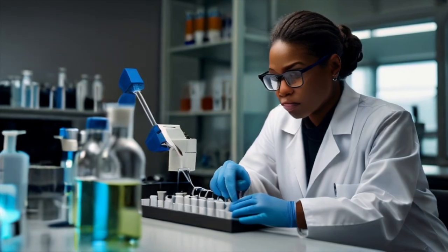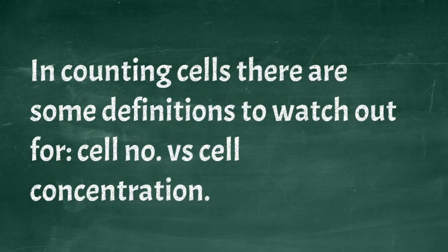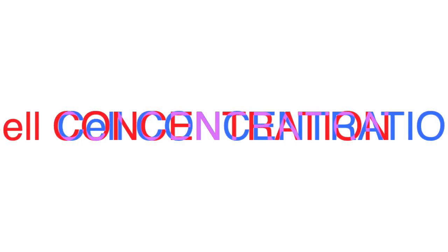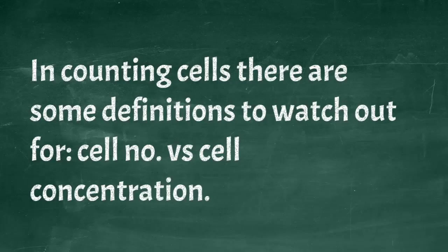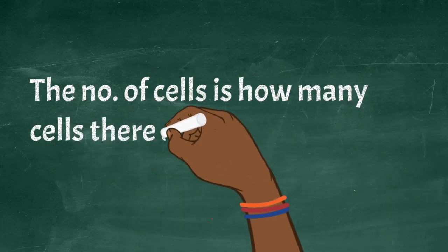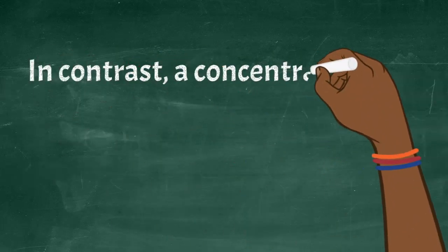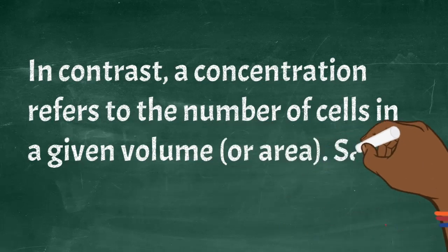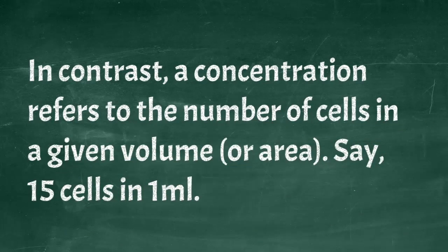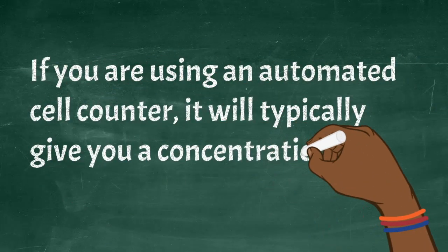In counting cells or calculating cell numbers, there are some definitions to watch out for. Cell number versus cell concentration are two different things. The number of cells refers to how many cells there are, for example 15 cells. In contrast, a concentration refers to the number of cells in a given volume or area, say 15 cells in one ml. If you are using an automated cell counter, it will typically give you a concentration readout.